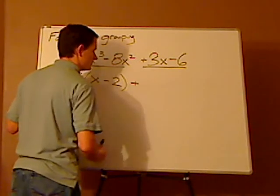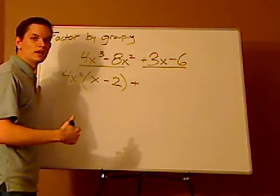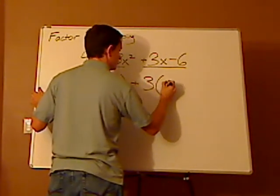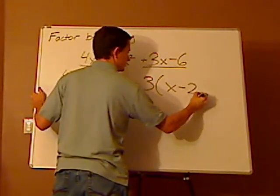Here, do the GCF. The GCF of 3x and negative 6 is 3. So that leaves you with x minus 2.